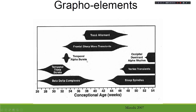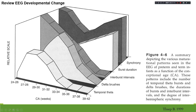The developmental change of specific patterns during sleep includes: temporal theta bursts appearing around 26 to 29 weeks conceptional age; delta brushes (beta-delta complex) peaking at 31 to 32 weeks and disappearing before 40 weeks gestational age; temporal theta-alpha bursts; frontal sharp transients; and trusset alternans. Synchrony gradually develops over 30 weeks conceptional age.